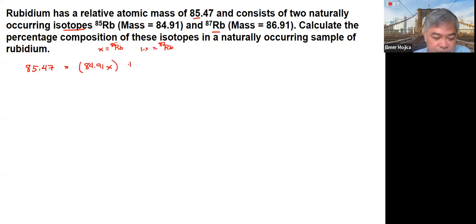So when we have that, we're going to have this, and you end up with 86.91 times 1 minus x. We're going to continue. So we distribute it, you get 86.91 minus 86.91x.